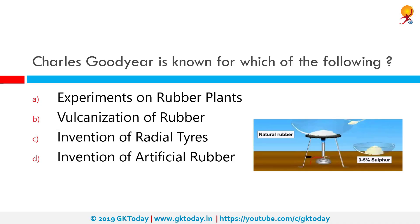Charles Goodyear is known for which of the following? He is known for the vulcanization of rubber. Vulcanization of rubber is a process of improvement of rubber elasticity and strength by heating it in the presence of sulfur, resulting in three-dimensional cross-linking of chain rubber molecules bonded to each other by sulfur atoms.